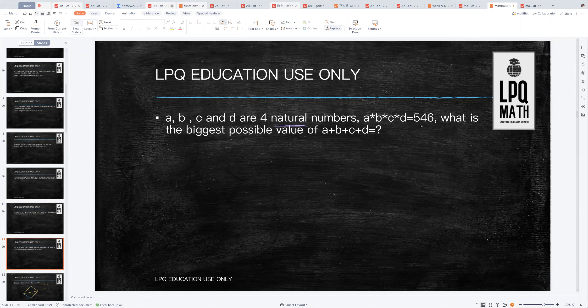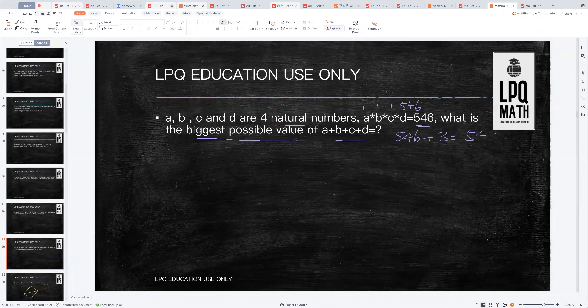A, B, C, D times together equals 546. What is the biggest possible value of A plus B plus C plus D? This question doesn't say that A, B, C, D cannot be equals to each other, so the easiest is to make them the same. It's 546 plus 3 equals 549.